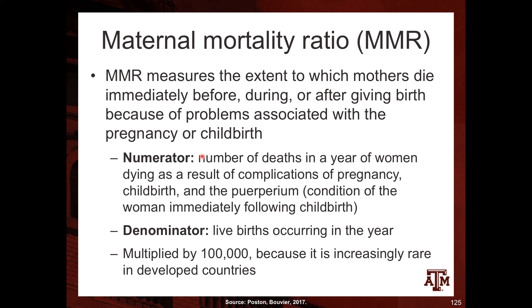It is called a ratio rather than a rate because the denominator — live births — is not at risk of becoming the numerator. In a rate, the denominator is at risk of experiencing the event in the numerator. For infant mortality, babies born in a given year are in the denominator and are at risk of dying before age one. In the maternal mortality ratio, we compare women dying from pregnancy-related causes to the number of live births — two different populations.